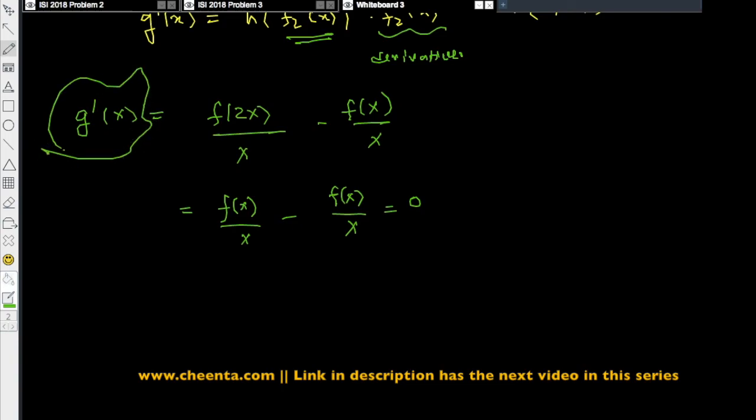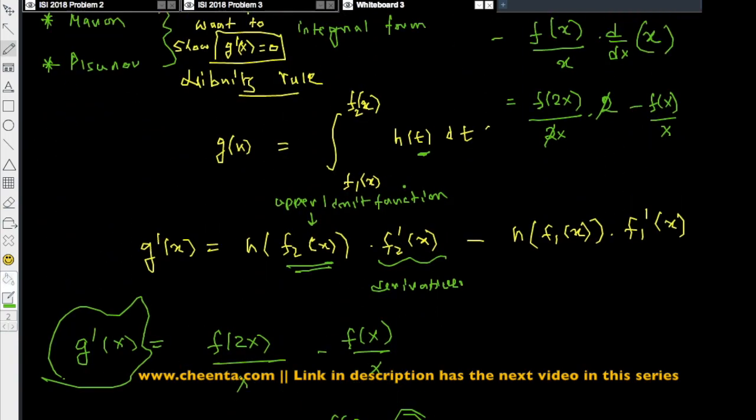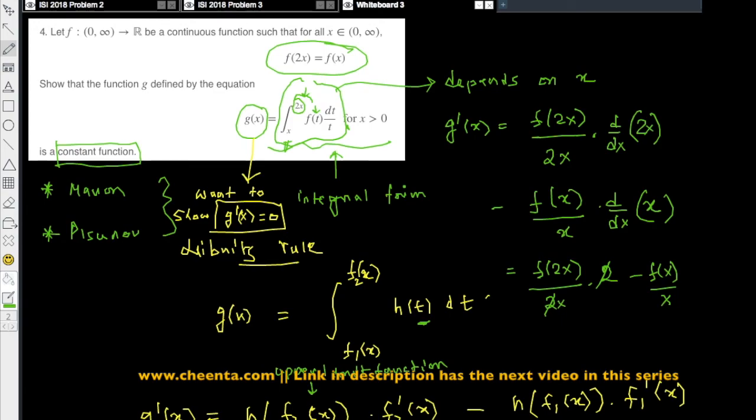That's what we wanted to show in the first place, that the derivative of the function g of x is 0. One thing you have to be very careful with: do not try to take the derivative of the function f because the problem says that the function f is continuous.